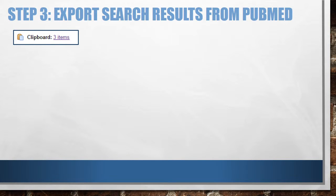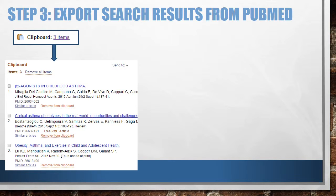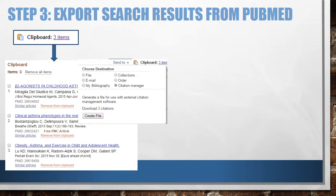Once you've gathered all the citations you wish, click on the clipboard icon on the top right-hand side of the PubMed search screen to view your clipboard. Click Send To and select Citation Manager. Click Create File. A file will download onto your computer containing the citations.